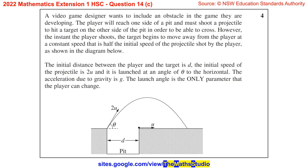Question 14c. A video game designer wants to include an obstacle in the game they are developing. The player will reach one side of a pit and must shoot a projectile to hit a target on the other side of the pit in order to be able to cross. However, the instant the player shoots, the target begins to move away from the player at a constant speed that is half the initial speed of the projectile. The initial distance between the player and the target is d. The initial speed of the projectile is 2u, and it is launched at an angle of theta to the horizontal. The acceleration due to gravity is g. The launch angle is the only parameter that the player can change.